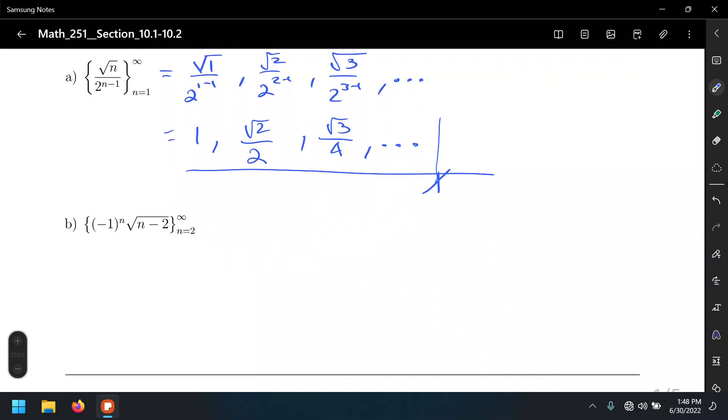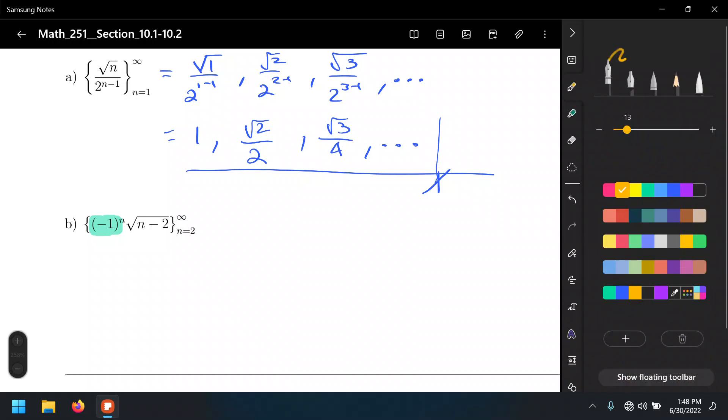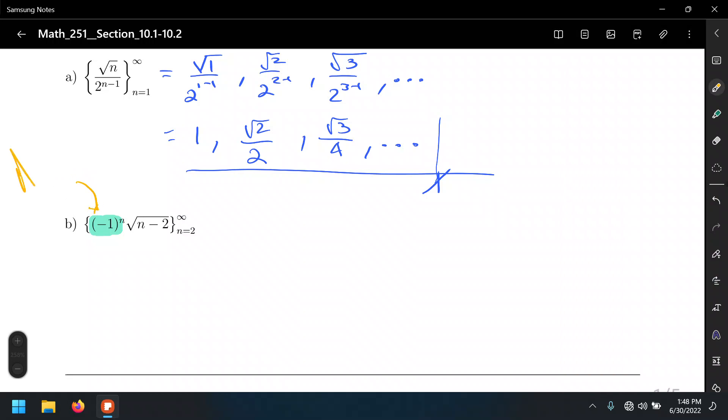Let's look at letter B. Letter B has something you may not have seen before. This negative 1 to the N. They have a special name. This is called an alternating factor.